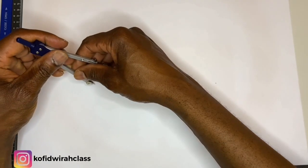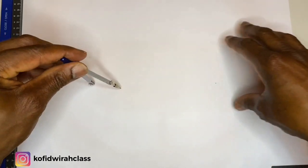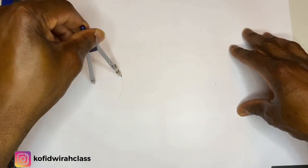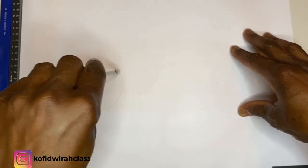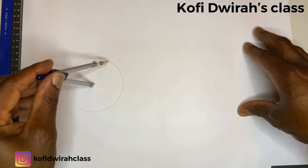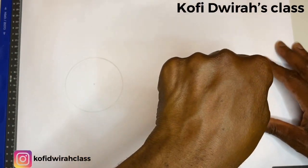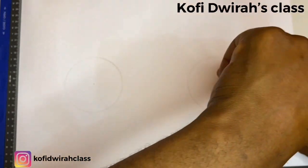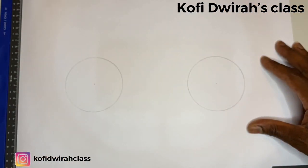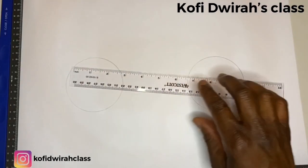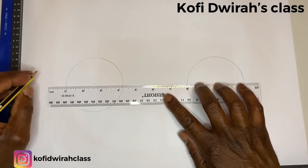Common external tangents to equal circles. So first we draw our circles with the same radius. We have our first circle. There we have our second circle.